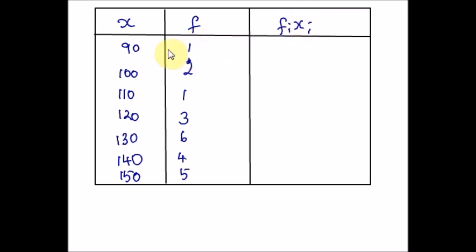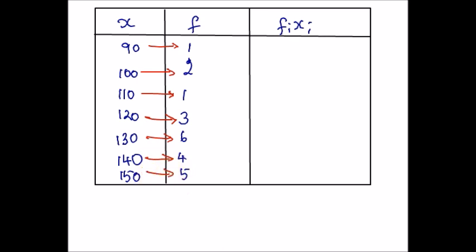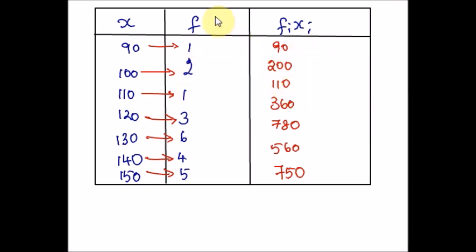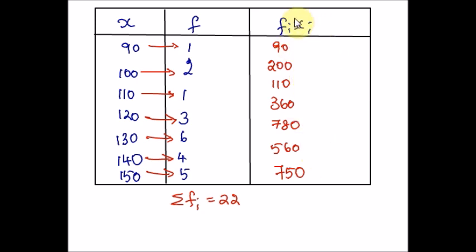Now let us find the product — multiply each x value and its corresponding frequency. So 90×1, 110×2, 100×2 and so on. By multiplying we get 110, 360, 780, 560, and 750. Hope you are clear with the table. Now we need to find the summation of column 2 and the summation of column 3 — that is, just add all the values in each column. Adding all the frequency values I am getting 22. Same way, adding all the product values I am getting 2850.